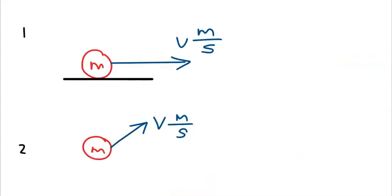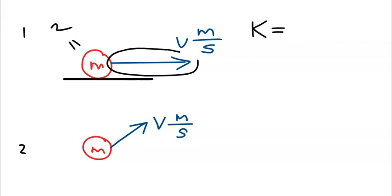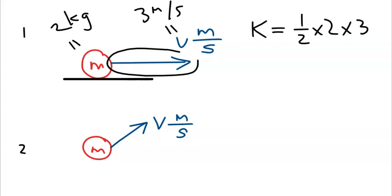Let's calculate kinetic energy for two cases. In case one, the object is moving purely to the right with speed v and has mass m. With mass equal to 2 kg and speed equal to 3 m/s, the kinetic energy is ½ × 2 × 3² = 9 joules.